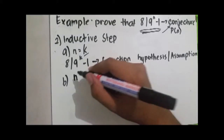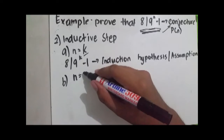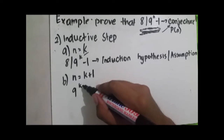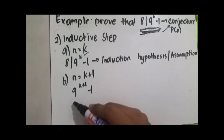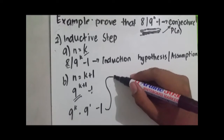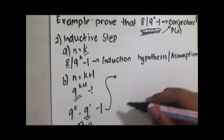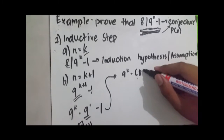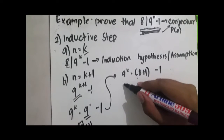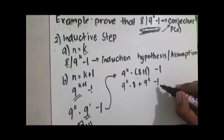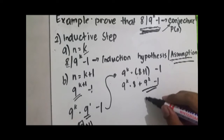The next thing we need to do is show that the conjecture is true for the number after k. We replace n by k plus 1, giving us 9^(k+1) minus 1. This equals 9^k times 9^1 minus 1, which we can rewrite as 9^k times (8 plus 1) minus 1. According to our assumption, this expression is divisible by 8.